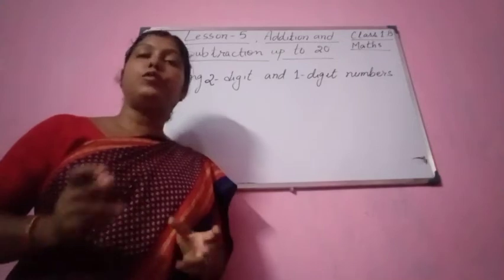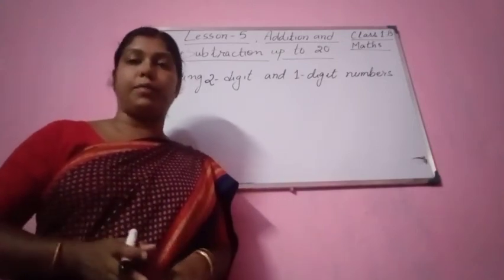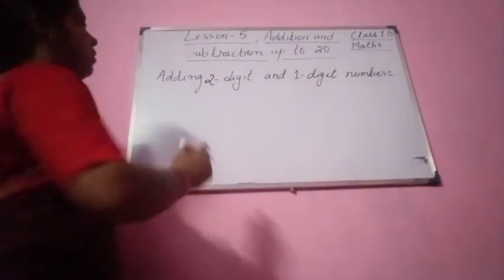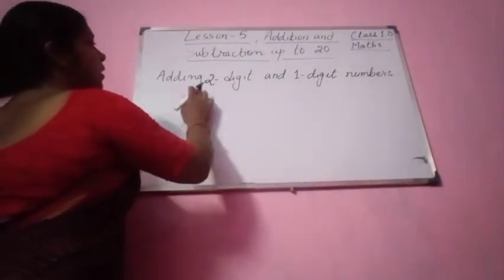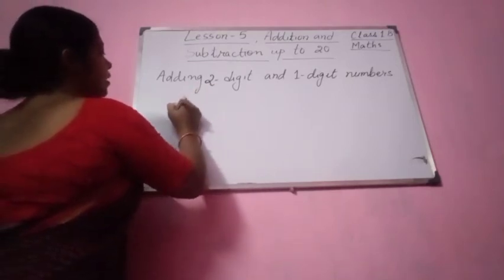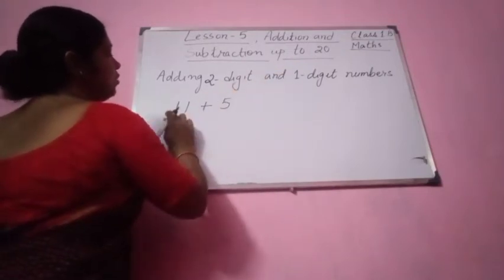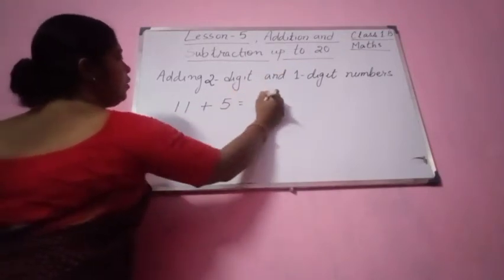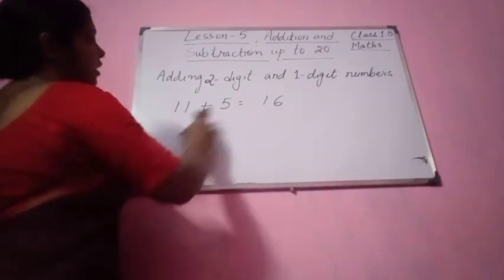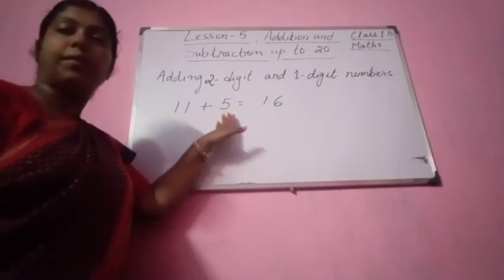So students, now we are going to add 2 digit and 1 digit numbers. You see here: adding 2 digit and 1 digit numbers. You can take any number but it should contain 2 digits. Let us take 11. 11 plus now you take a 1 digit number — any 1 digit number. So 11 plus 5 equal to 16. 11 is a 2 digit number whereas 5 is a 1 digit number.